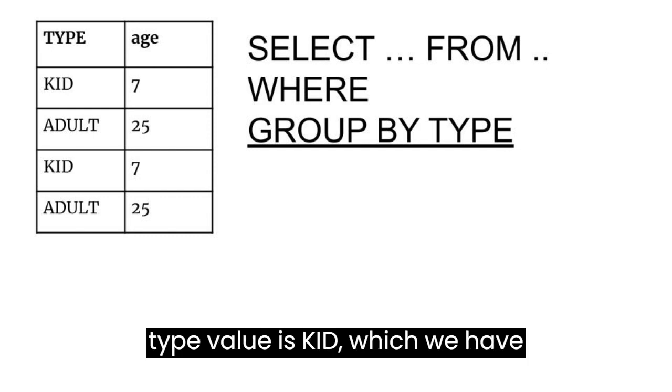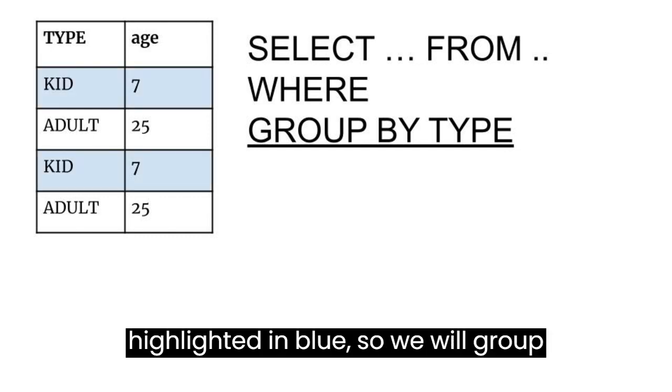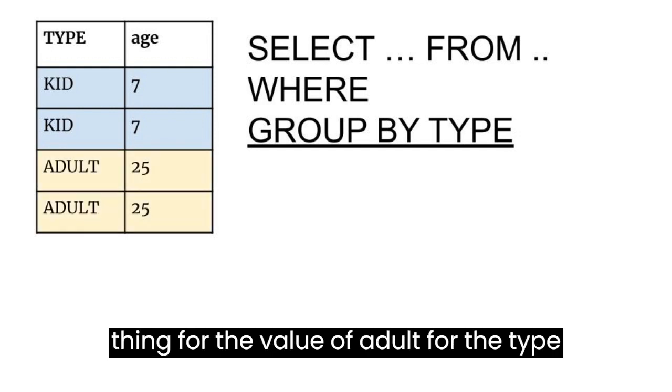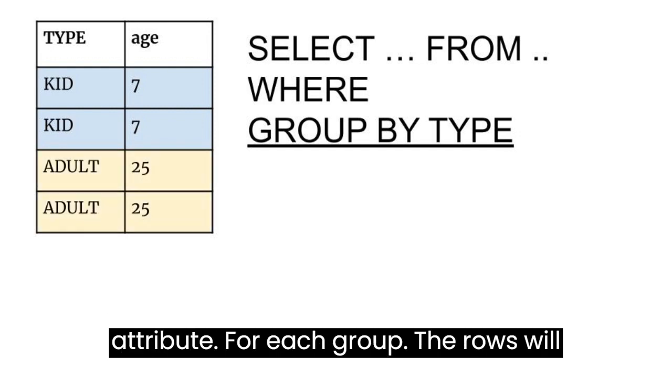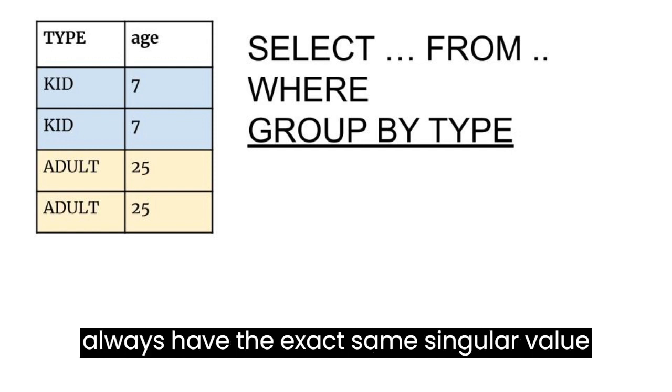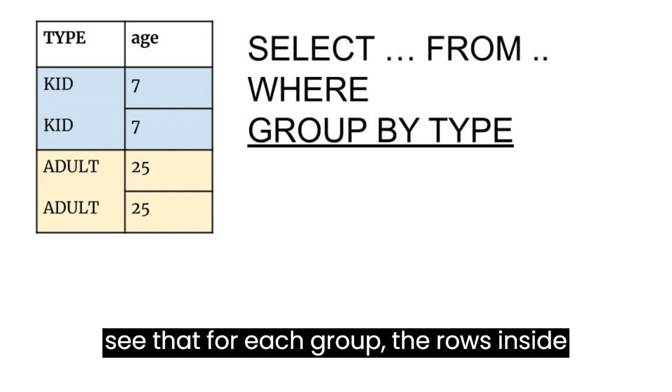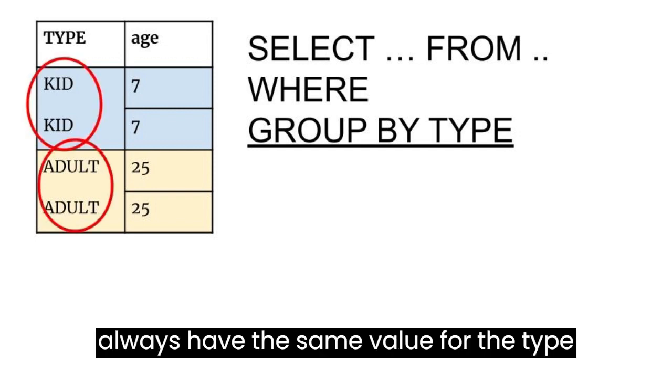The first type value is kid, which we have highlighted in blue, so we will group them up into one group. We'll do the same thing for the value of adult for the type attribute. For each group, the rows will always have the exact same singular value for the attributes that we have grouped by, so we will remove the dividing line for demonstration purposes. Now we can see that for each group, the rows inside always have the same value for the type attribute.